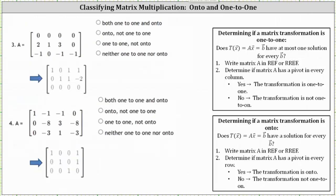For number three, again I have the matrix written in reduced row echelon form. We have pivots in row one column one and row two column two. Notice here we don't have pivots in every column, and therefore the multiplication is not one-to-one. We also don't have pivots in every row, so the multiplication is also not onto. We select neither one-to-one nor onto.